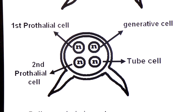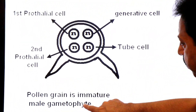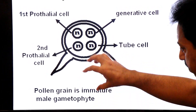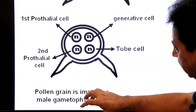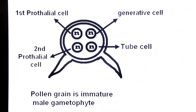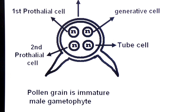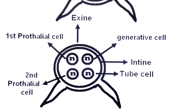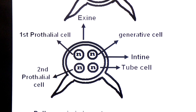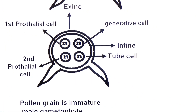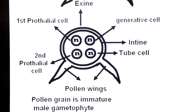This four-cell structure is the immature male gametophyte pollen grain. It has an outer layer called exine, an inner layer called intine, and two pollen wings produced by the exine.